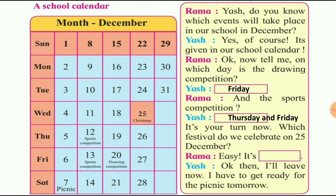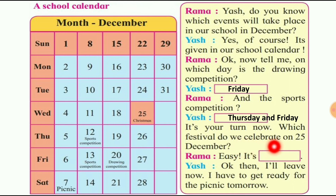Rama, now you tell: 25th December को कौन सा festival हम लोग celebrate करते हैं? Rama says: 'It is easy!' Calendar देखता है — बिना देखे आप लोगों को मालूम होता है — Christmas! 'It is easy, it is Christmas!'